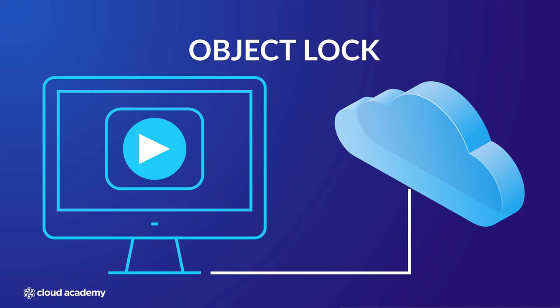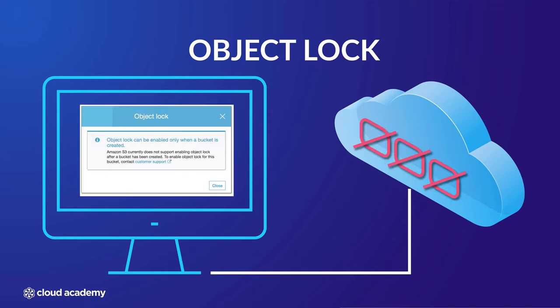Setting object lock on a bucket can only be achieved at the time of the creation of the bucket. If you attempt to enable it on an existing bucket by clicking on the object lock tile in the bucket properties, you would receive the following error.